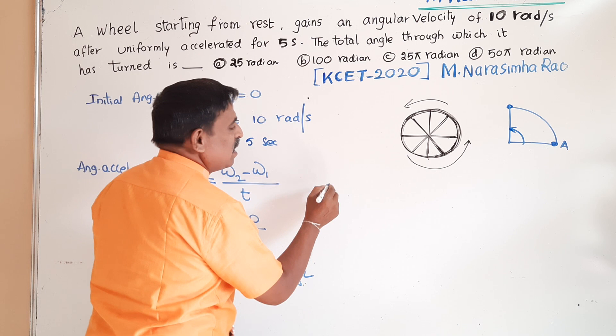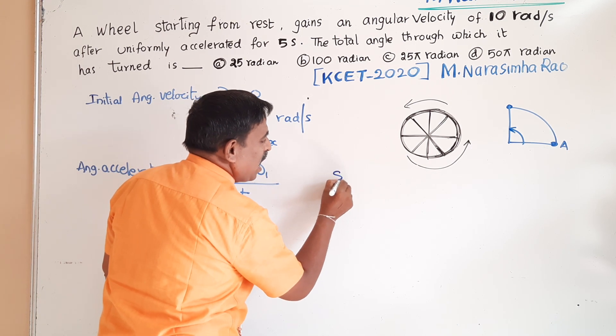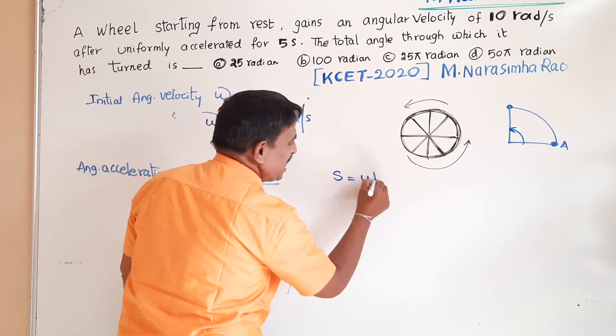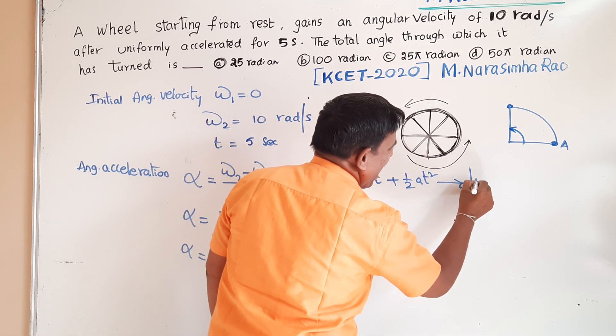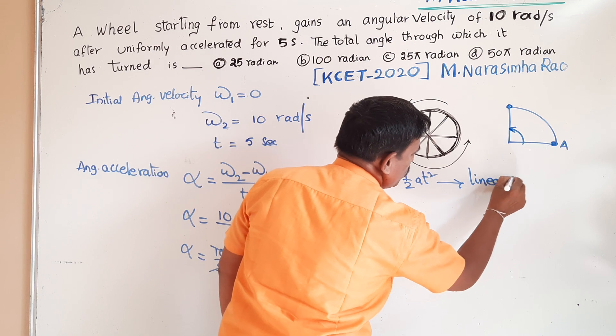In linear motion, we have one formula: displacement s is equal to ut plus half a t square. This is valid in linear motion.